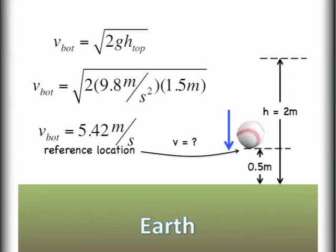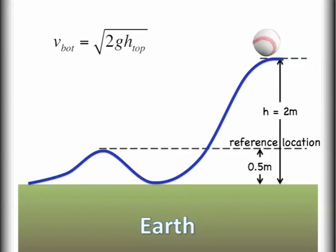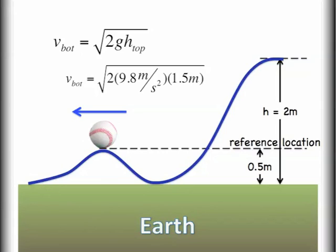The true beauty of this equation is that it doesn't have to be limited to vertical situations. Let's say in this situation we want to know how fast the ball is going to travel over that little hump in the road. And for convenience I'm going to go ahead and say it also is located at 0.5 meters. So we will say that our reference location is still located at 0.5 meters above the earth. The ball is ultimately still converting all of its potential energy over to kinetic energy. So in this situation we still find that the ball would be traveling at 5.42 meters per second.